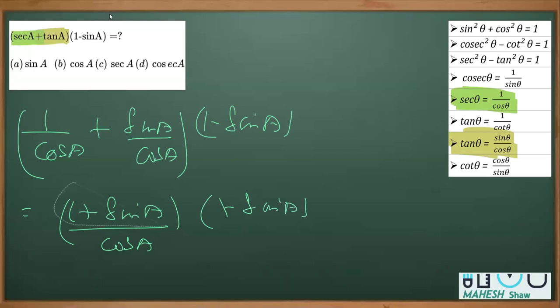Now you can see that (1 - sinA) times (1 + sinA), by applying the identity, we can write as 1 - sin²A. That is 1 - sin²A in the numerator, divided by cosA.